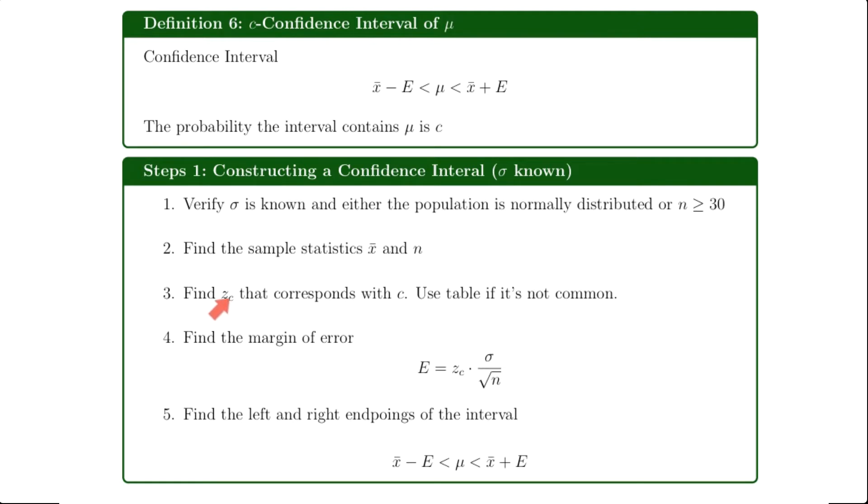From there we're going to find the critical value z_c. Now that's going to correspond with the confidence level that you're given. I have another video on how to do exactly that. And then we're going to calculate the margin of error, and then finally we're going to use this formula to calculate the confidence interval.